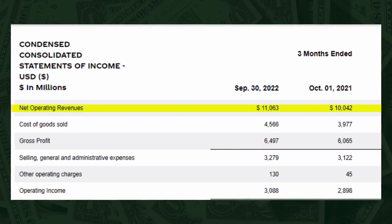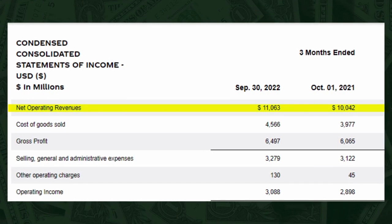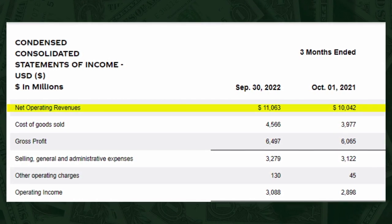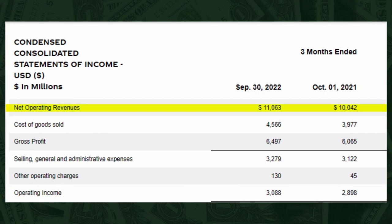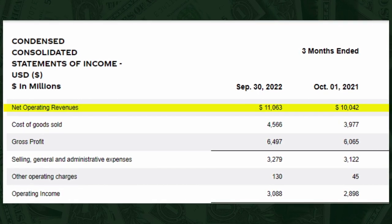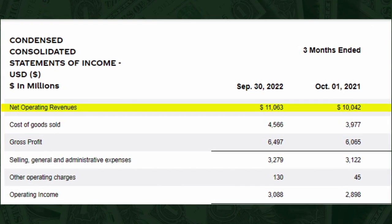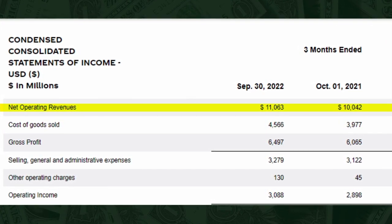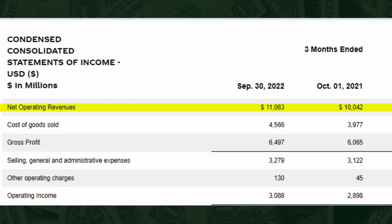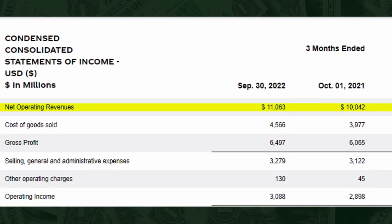The first line on the income statement is always total revenue. Revenue is the amount of money the company received in the time period of the income statement. In this example, it is roughly 11 million dollars for Coca-Cola in the quarter. This line shows the amount of money that came in, not the profits.